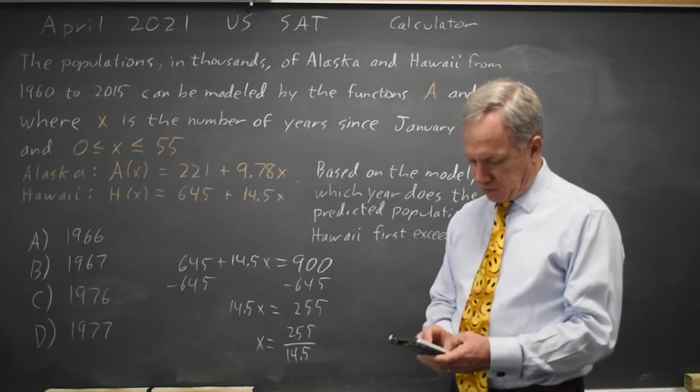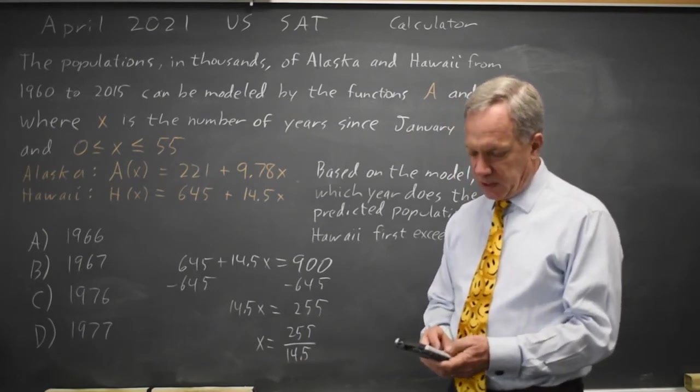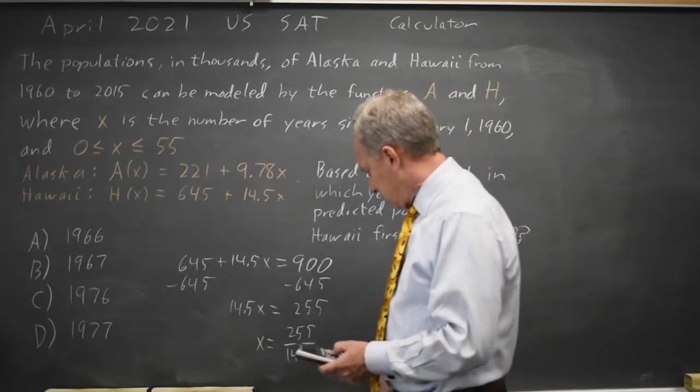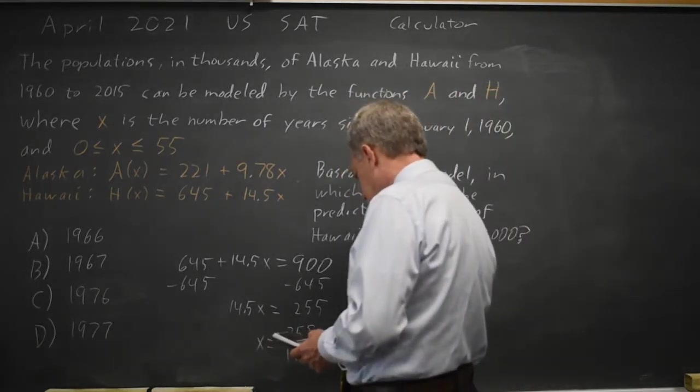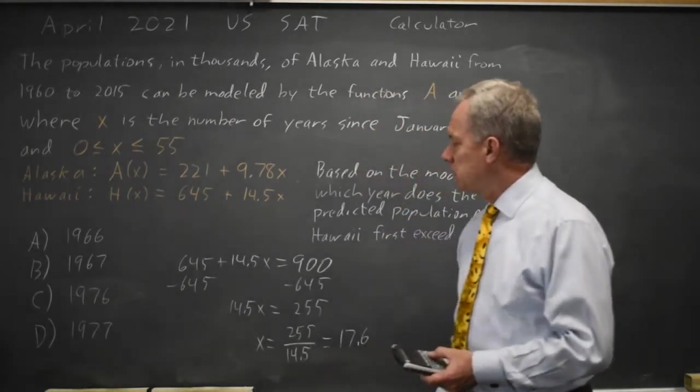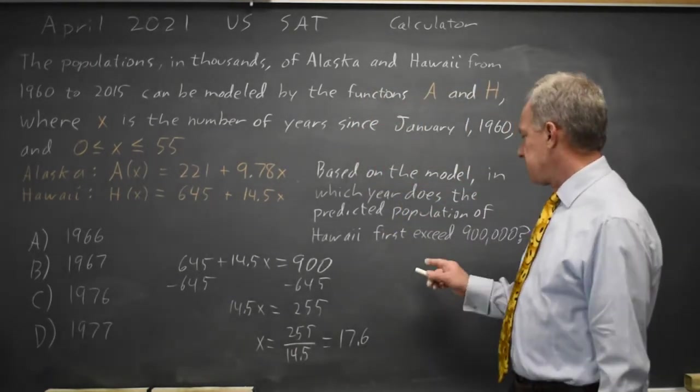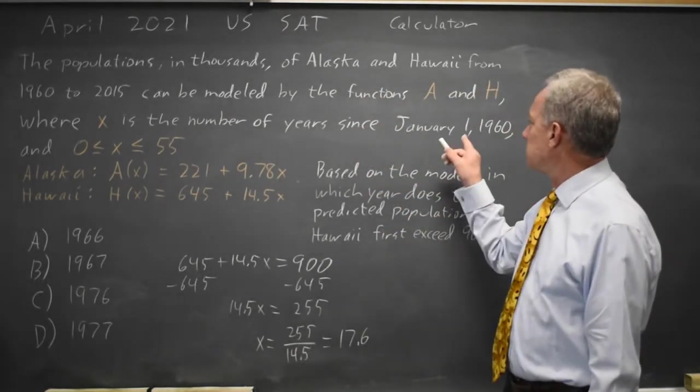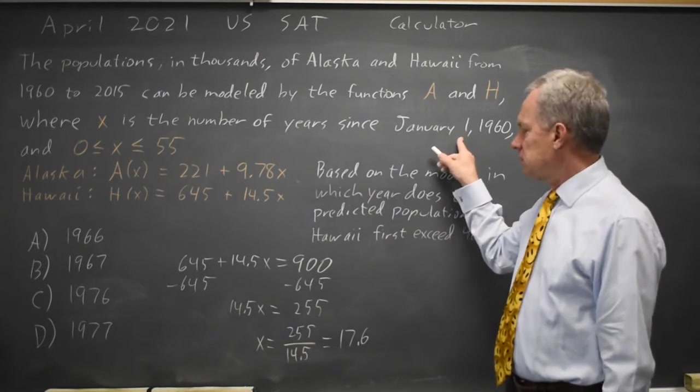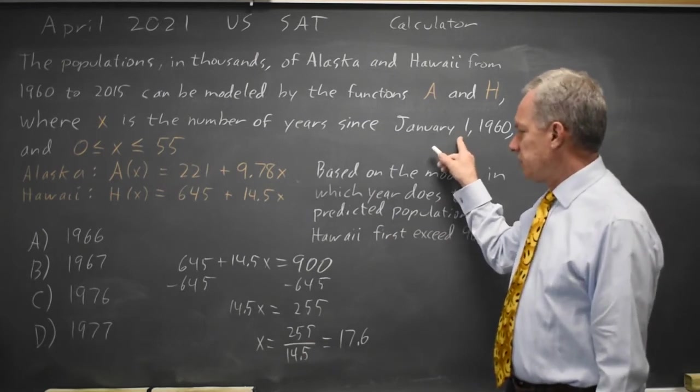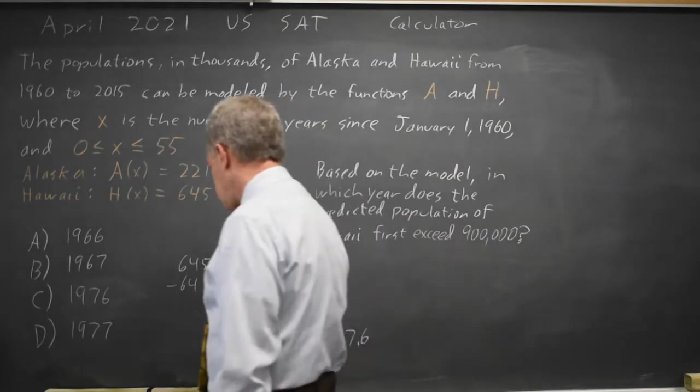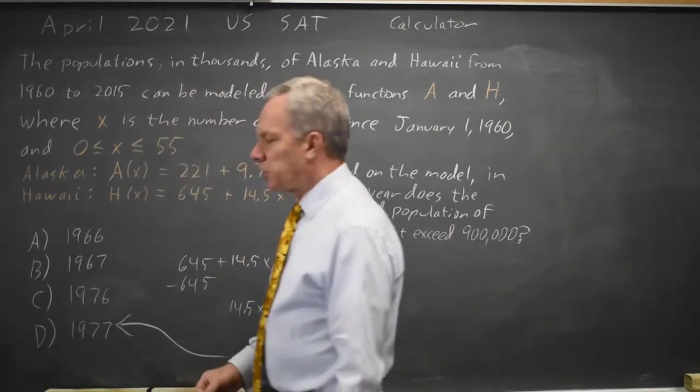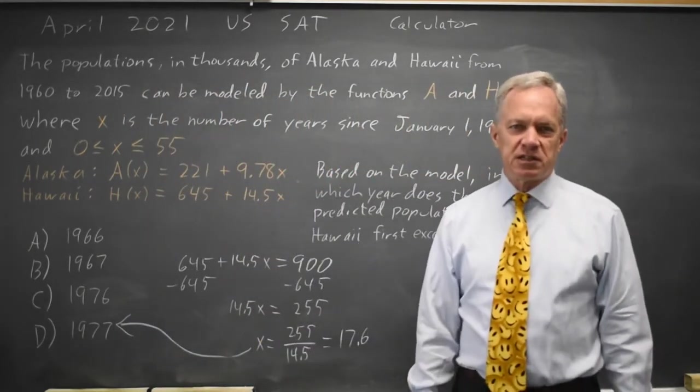255 over 14.5 gives me 17.58. So 17.6 years after January 1, 1960, which is in 1977, the population of Hawaii first exceeds 900,000.